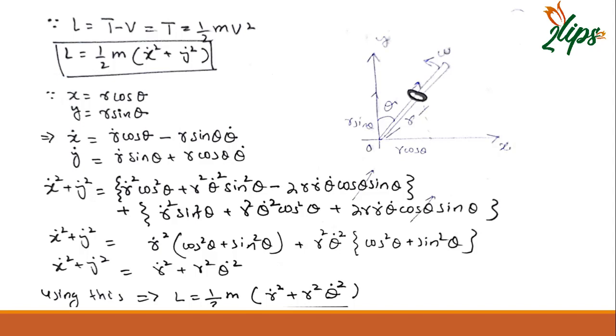Now we need to take the time derivative. X dot equals R dot cos theta minus R sine theta theta dot. Similarly, I can take the derivative of Y, so it equals R dot sine theta plus R cos theta theta dot.